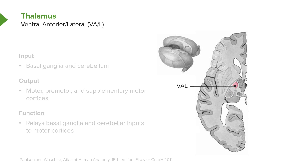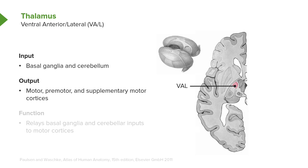Next on our list is the ventral anterior/lateral thalamic nuclei, the VA-L, highlighted in the image. Their input is going to be from the basal ganglia as well as from the cerebellum. The output from this collection of two nuclei goes to the motor, premotor, and supplemental motor cortices, which are located in the frontal lobe. Consequently, this is the relay between the basal ganglia and cerebellar inputs to the motor cortical areas.